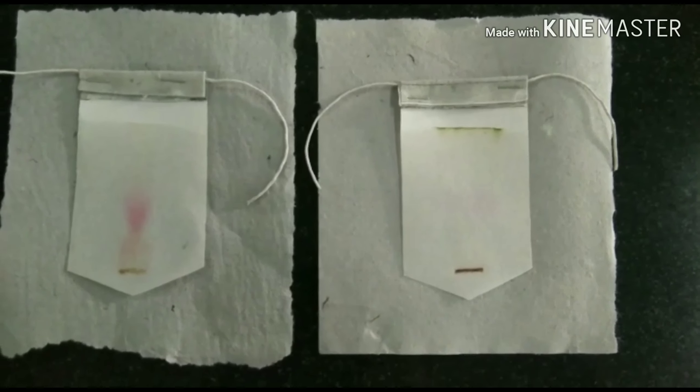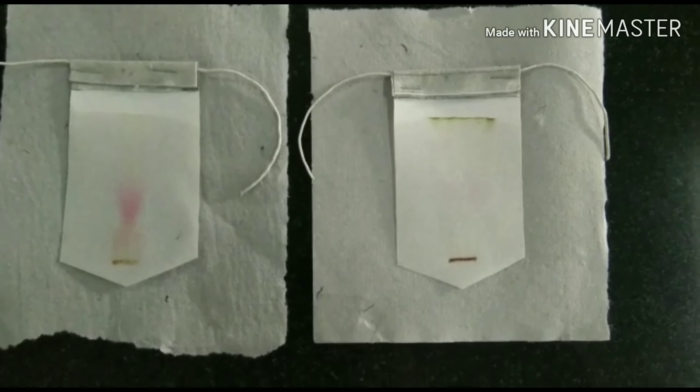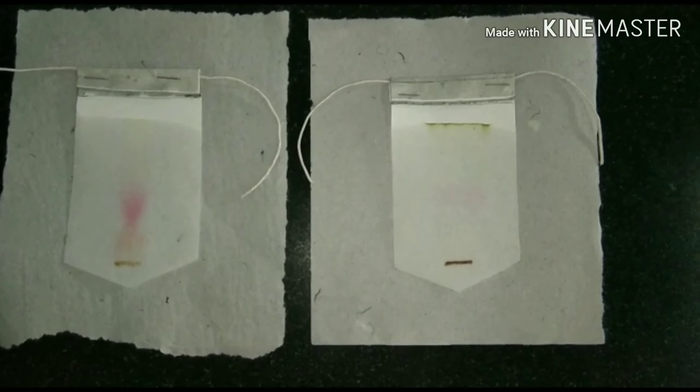The result: the pigment present in Tradescantia and apple peel is anthocyanin, and the pigment present in turmeric powder is curcumin.